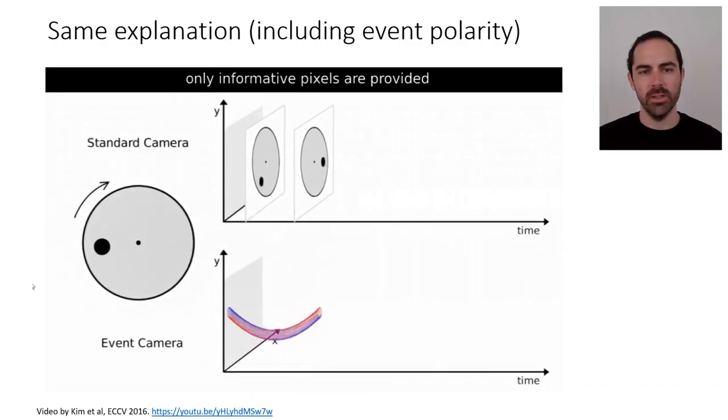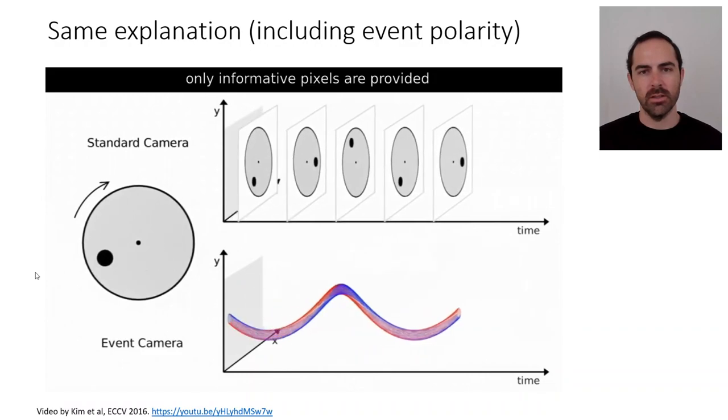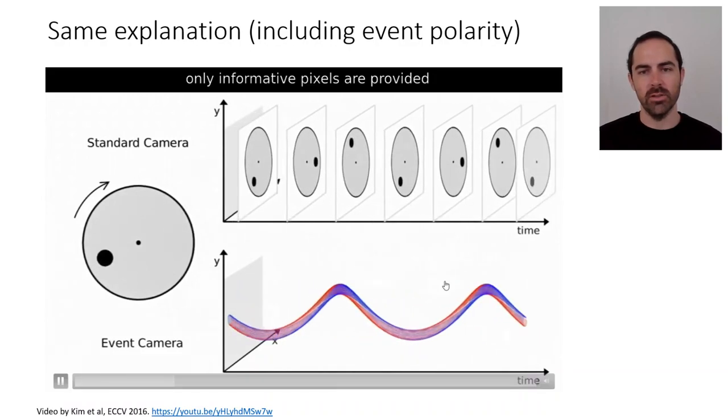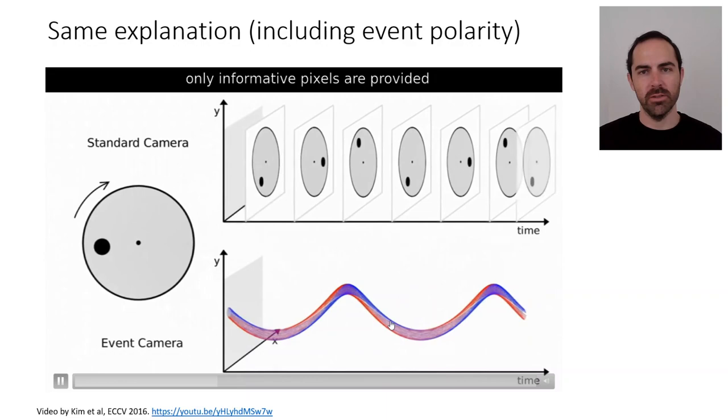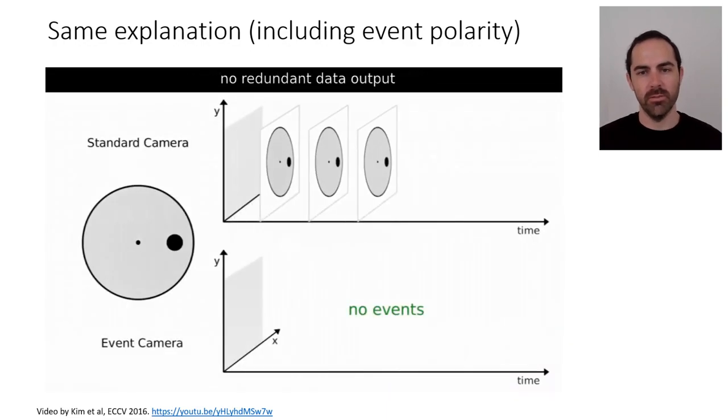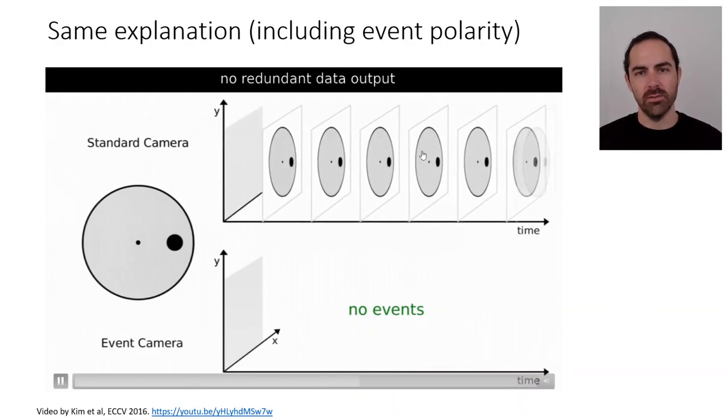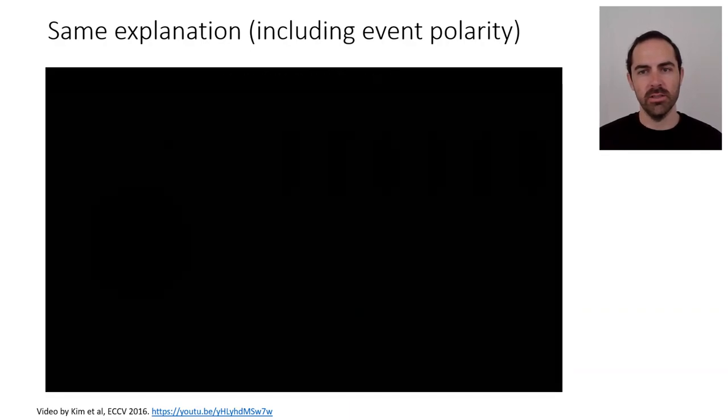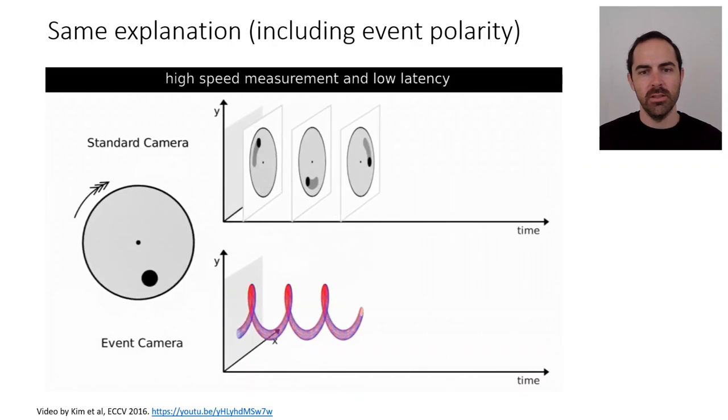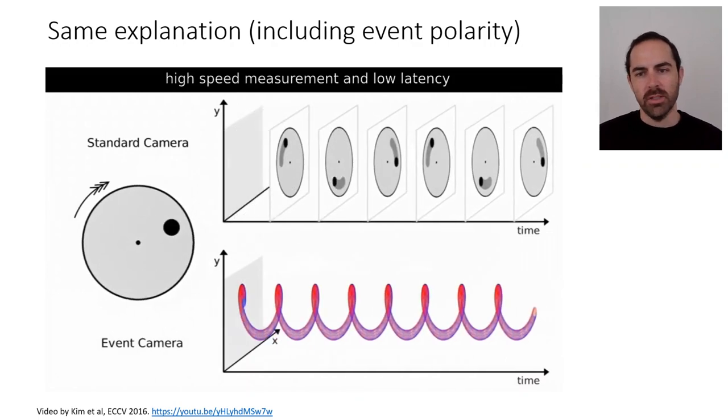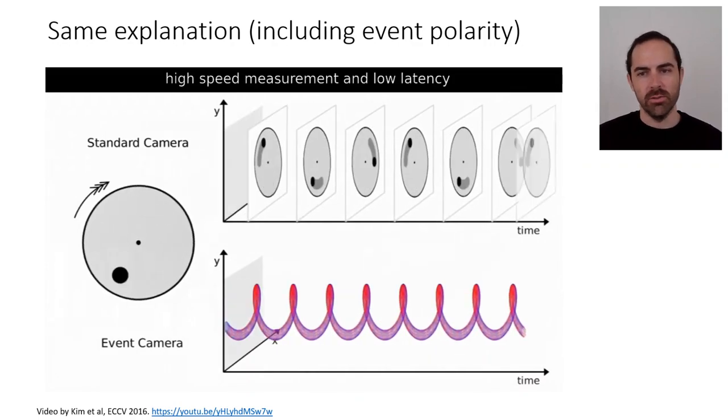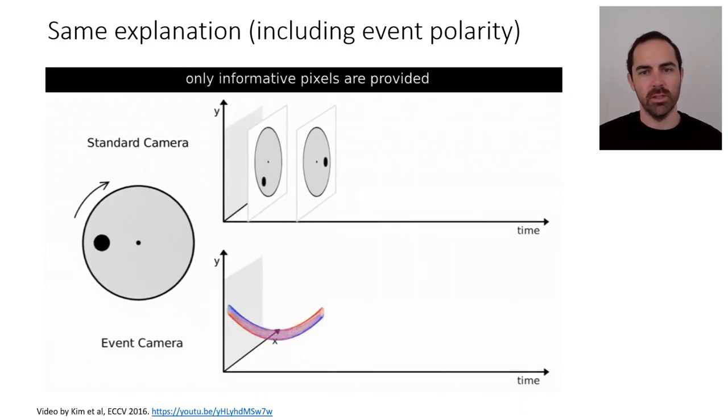So again we see that the standard camera is on the top and the event camera on the bottom. Only informative pixels are provided. If nothing moves in the scene, there are no events. Whereas the standard camera is transmitting all redundant data. And in high speed, the event camera still has an advantage because it's a very high speed sensor compared to standard camera.